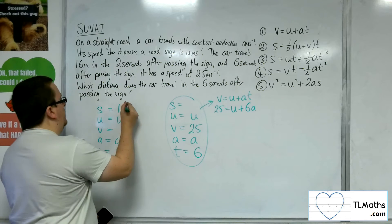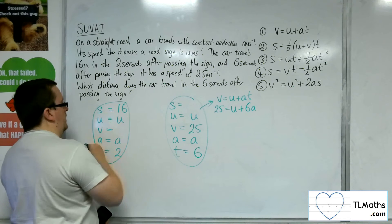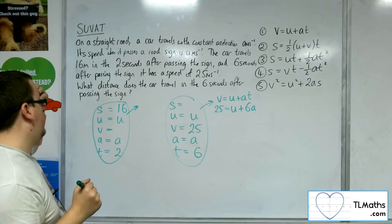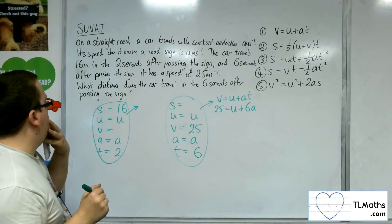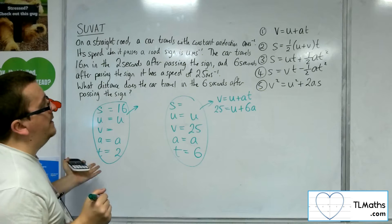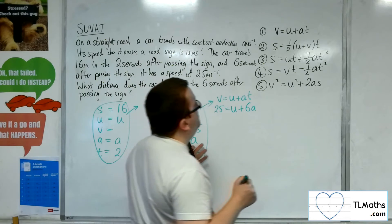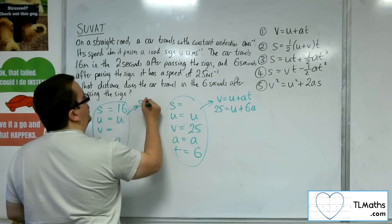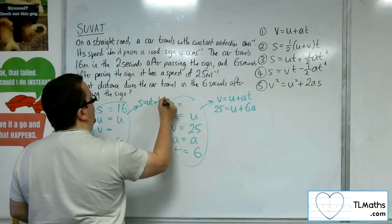Now can I figure out a similar equation using this information? We want one that definitely doesn't have v in it, which is the middle one. So s equals ut plus half a t squared.